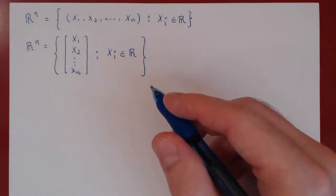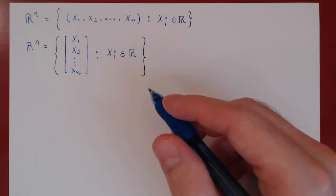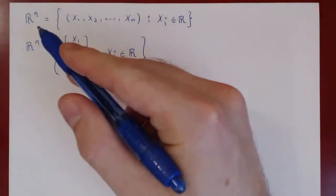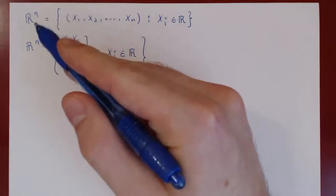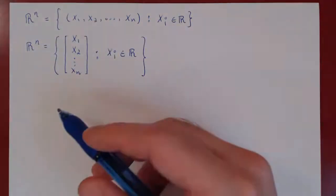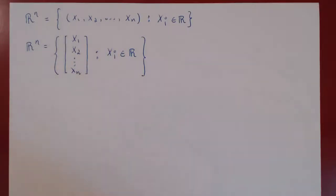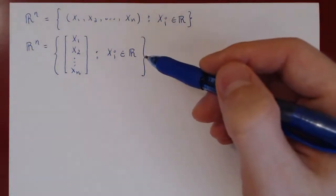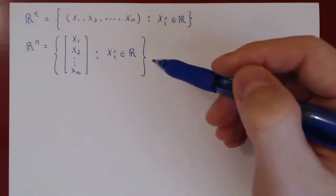In this video we want to consider extending our basic notions of vectors to Rⁿ for any n — therefore R⁴, R⁵, R⁶ and beyond. The question is: which natural geometric concepts of vectors carry over in Rⁿ, in higher dimensional spaces?